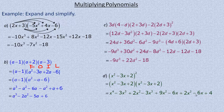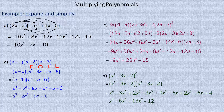Now we collect like terms. There's only one x to the fourth term. The x cubed terms: negative 3x cubed plus negative 3x cubed is negative 6x cubed. The x squared terms: 2x squared plus 9x squared plus 2x squared is 13x squared. The x terms: negative 6x plus negative 6x is negative 12x. And the only constant is 4. So the simplified, expanded version is x to the fourth minus 6x cubed plus 13x squared minus 12x plus 4.